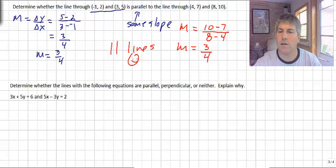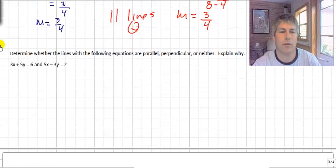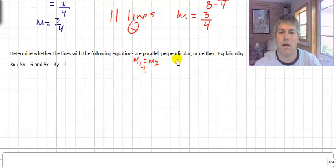In our second sample problem, let's take a look at this. This one says, determine whether lines with the following equations are parallel, perpendicular, or neither. So parallel, perpendicular, or neither. We're talking slope. So does the slope of one line equal the slope of the other? Or are the slopes opposite reciprocals? So perpendicular lines, if the slopes are opposite reciprocals, we've got to look at that.